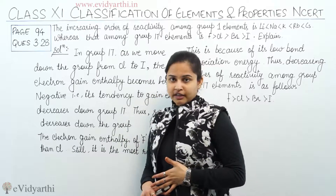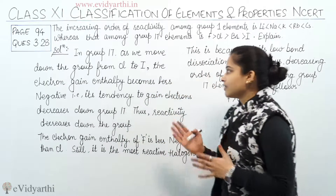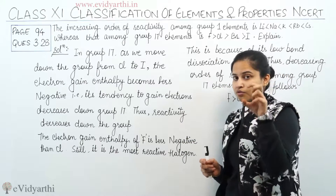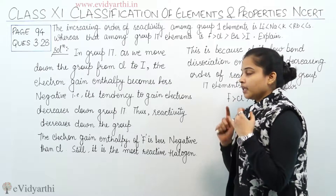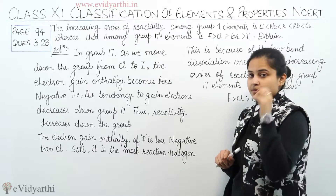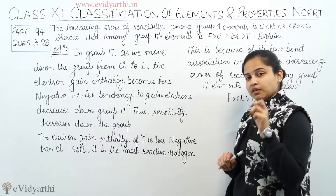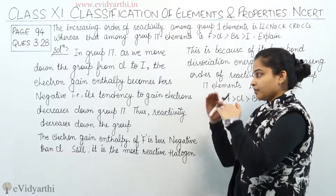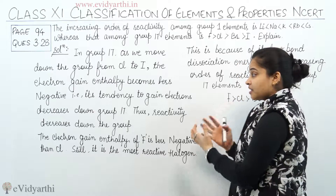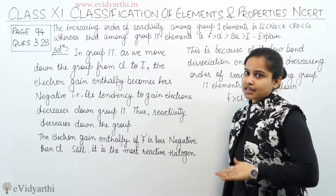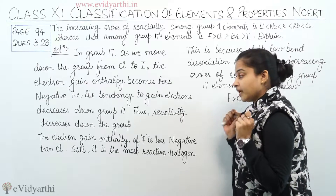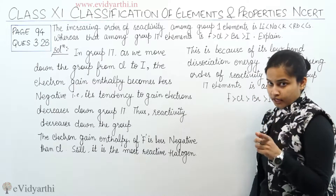Another reason is electron gain enthalpy. In Group 17, as we move down the group from chlorine to iodine, the electron gain enthalpy becomes less negative. This in turn means that the tendency to gain an electron decreases down the group. Thus, reactivity decreases down the group.